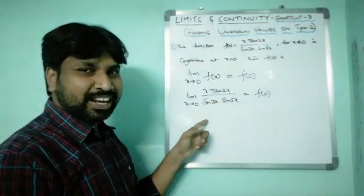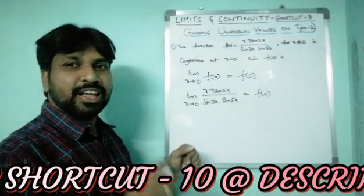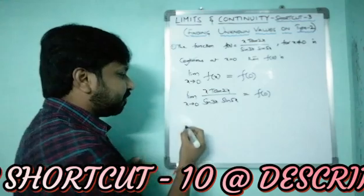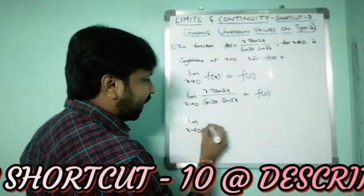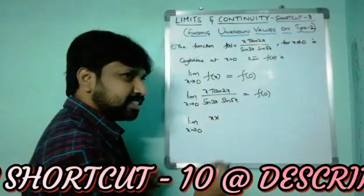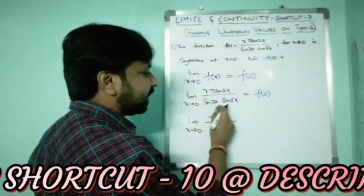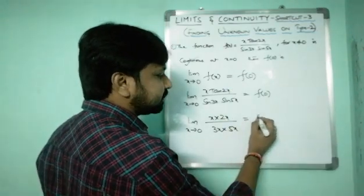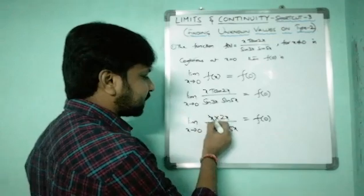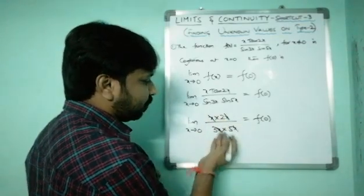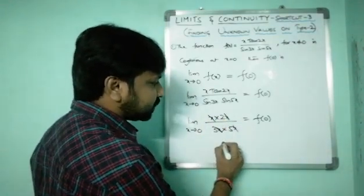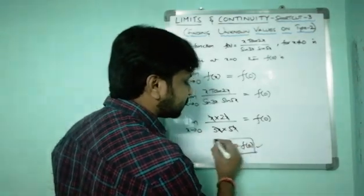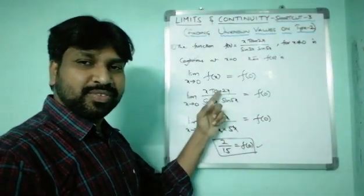According to shortcut number 10 (see the description), we write: limit x→0 of x · (tan2x / 2x) · 2x divided by (sin3x / 3x) · 3x · (sin5x / 5x) · 5x. The x's cancel, constants remain: 2 divided by (3 × 5) = 2/15. So f(0) equals 2/15.